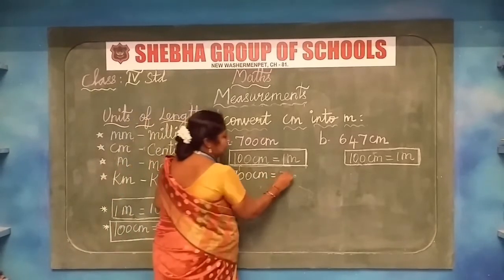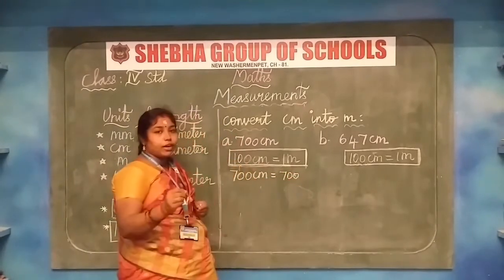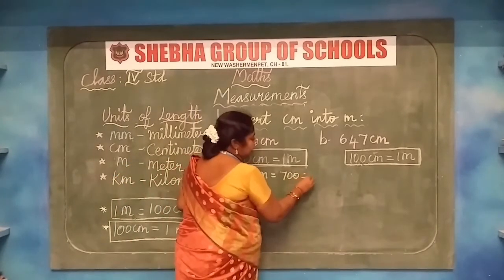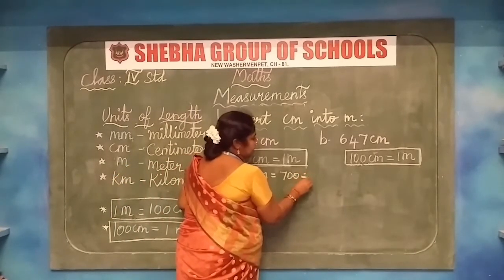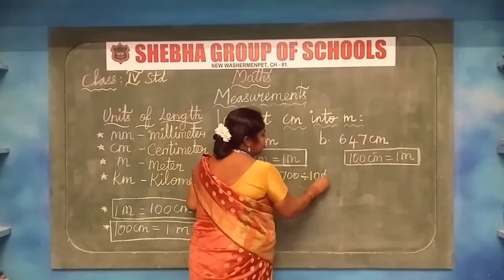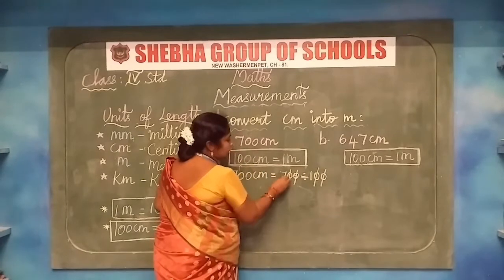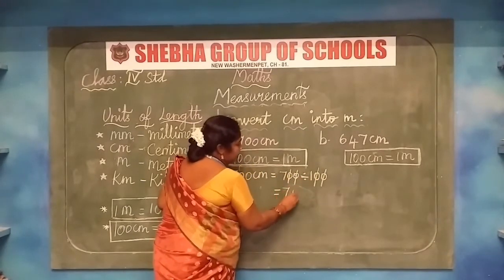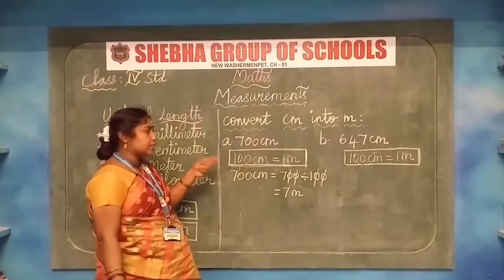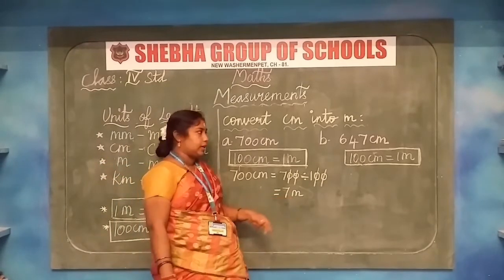First we write 700 centimeter, then divide by 100. We strike off the two zeros: 7 divided by 1 gives 7 meter. We have converted 700 centimeter into 7 meter. The answer is 7 meter.